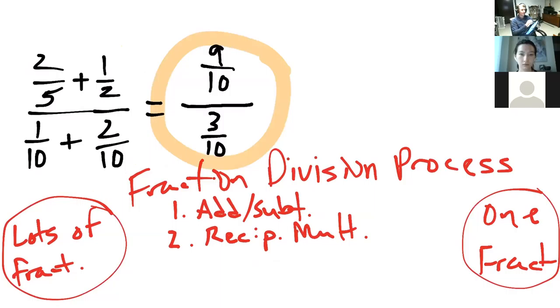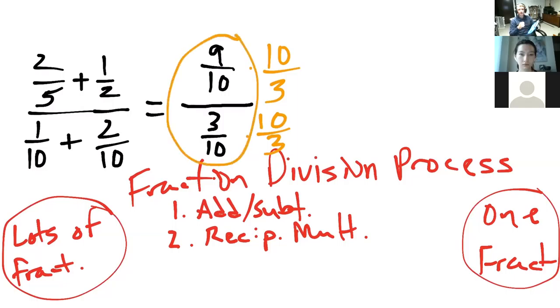We know exactly which reciprocal to use. It's ten-thirds. Okay? So this is kind of a key step, getting your fractions to look like this. One fraction divided by one fraction, and then do this. Step two.